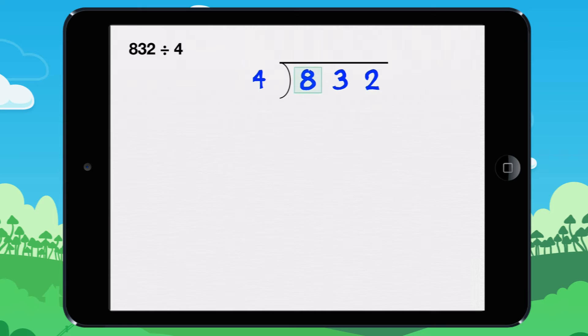How many times does 8 go into 4? It goes in 2 times, because 2 times 4 equals 8. 2 times 4 equals 8.